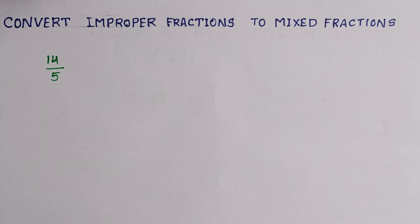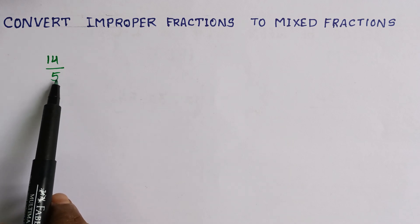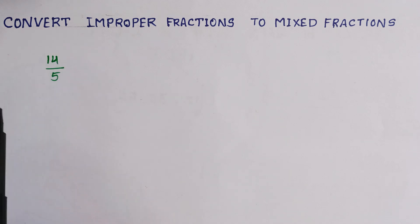Hello, welcome to A to Z Easy Maths. Now we are going to see how to convert improper fractions to mixed fractions. Before getting to the topic, first we need to know what is an improper fraction. Improper fraction means always the denominator is lesser than the numerator.